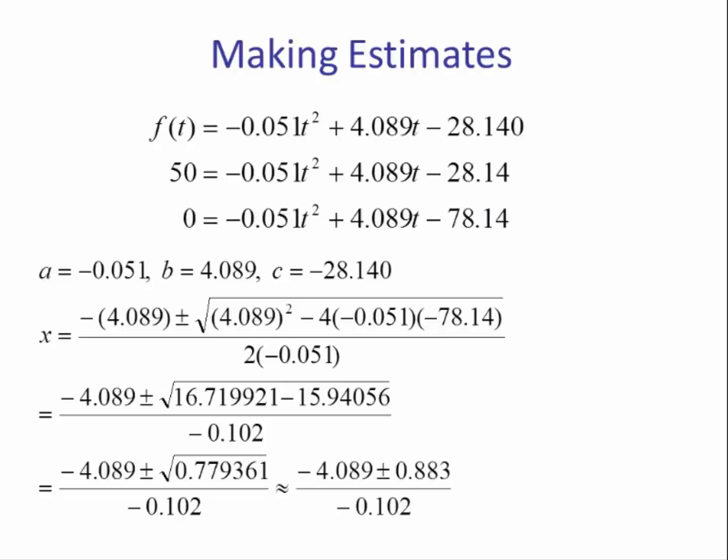Taking the square root, we are left with this expression. And when we split those up, the first age is approximately 48.7 years and the second age is approximately 31.4 years.